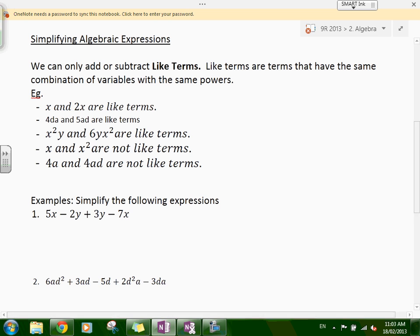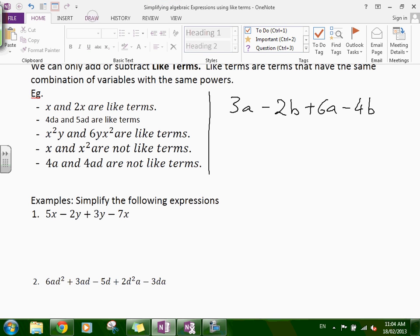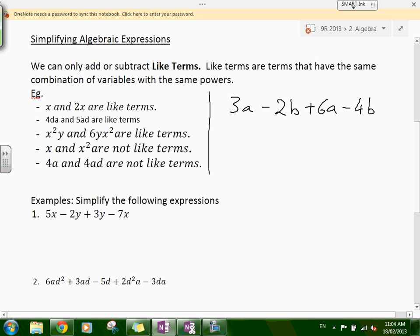I wanted to make a note here about the idea of the symbol that goes with the term. If we have something like 3a minus 2b plus 6a minus 4b, the sign of the term goes together with it. This one is positive, you don't write it, it's plus. The negative goes with the term after it. The positive sign goes with the term after it. The negative goes with the term after it.